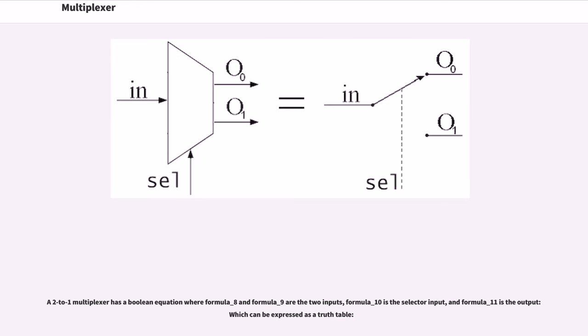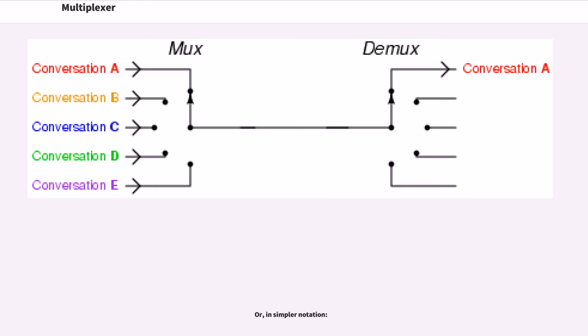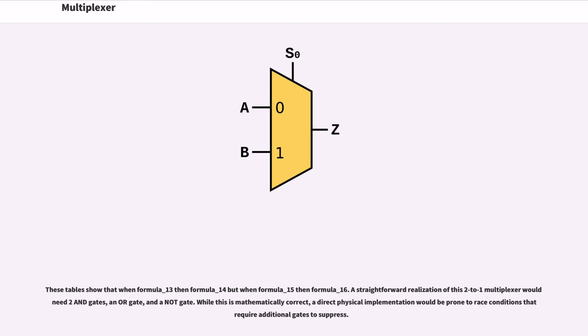A 2 to 1 multiplexer has a Boolean equation where formula underscore 8 and formula underscore 9 are the two inputs, formula underscore 10 is the selector input, and formula underscore 11 is the output which can be expressed as a truth table. Or, in simpler notation. These tables show that when formula underscore 13 then formula underscore 14 but when formula underscore 15 then formula underscore 16.